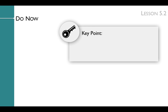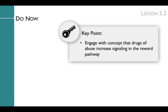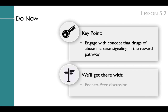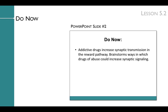The key point of the lesson's Do Now is to engage students with the concept that drugs of abuse increase signaling in the reward pathway. We'll get there with a peer-to-peer discussion. In the Do Now, you'll tell students that addictive drugs increase synaptic transmission in the reward pathway and have them work with a partner to brainstorm ways in which drugs of abuse could increase synaptic signaling.